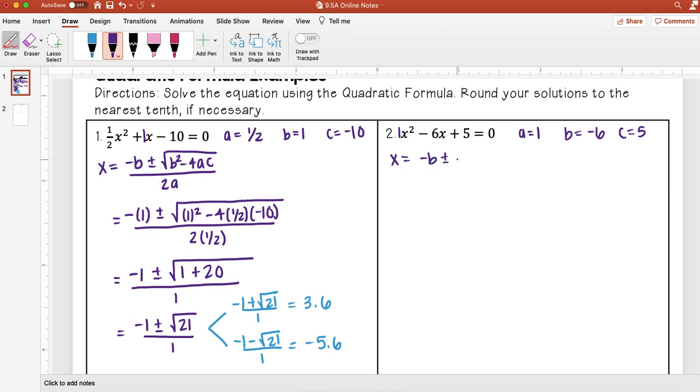So my formula is negative b plus or minus the square root of b squared minus 4ac all over 2a. So here my b value is negative 6. b squared, don't forget those parentheses. Minus 4 times a, which is 1, times c, which is 5. All over 2 times a, which is 1.